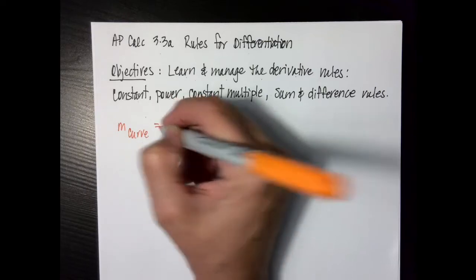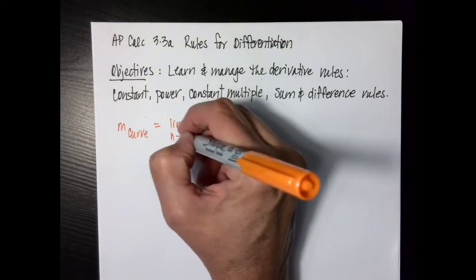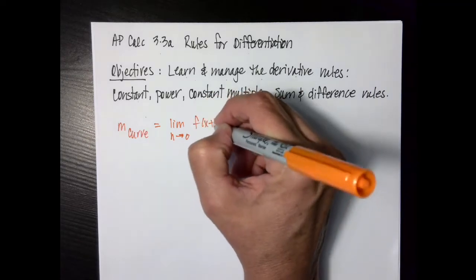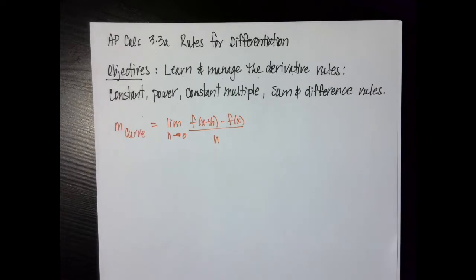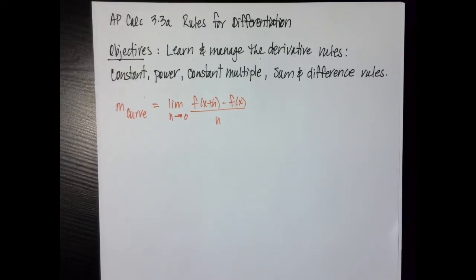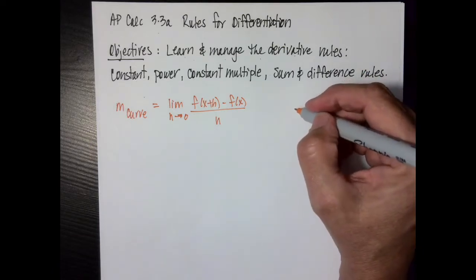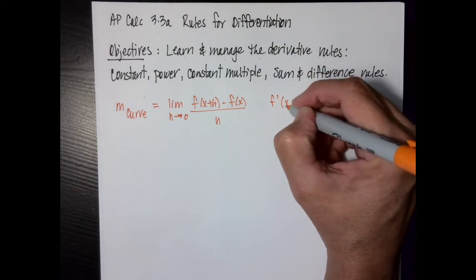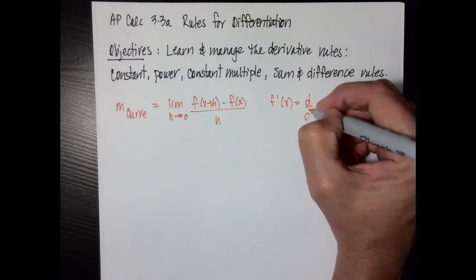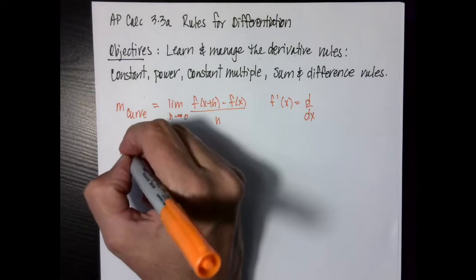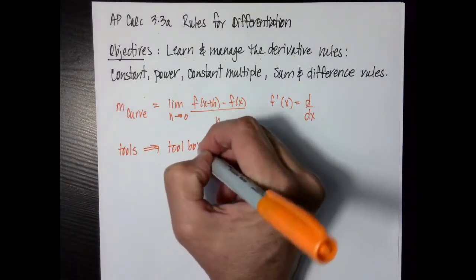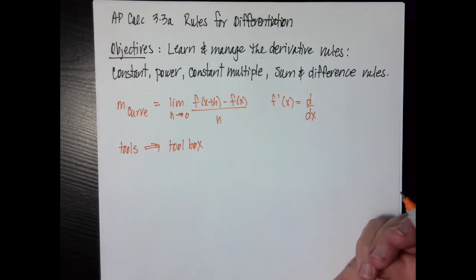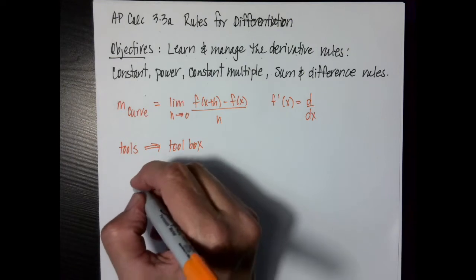Remember that we have been doing the derivative, or the slope of a curve, using f of x plus h minus f of x over h. But there are times when that process is too hideous, so very important mathematicians have developed a bunch of rules that we can use. Remember that these rules are going to be tools for our toolbox.